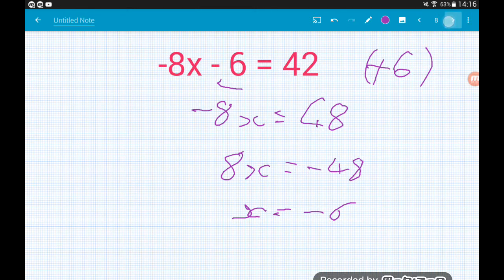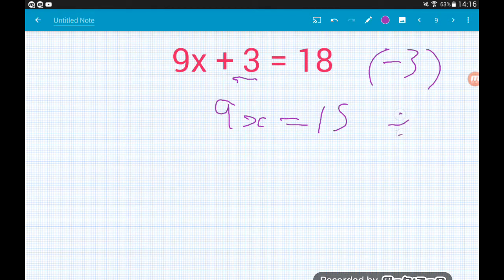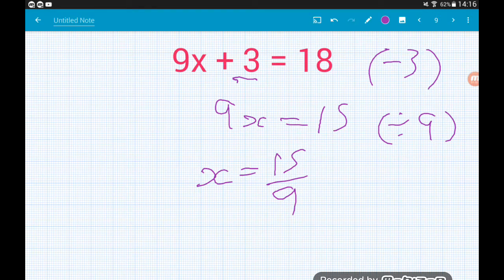The next example: 9x add 3 equals 18. As always, we're going to start by moving that guy. That leaves us with 9x equals 15. Then if we divide by 9, again 9 isn't going to go into 15, but we can happily leave it as a fraction. So we get 15 over 9. But we really should simplify that. We've got a common factor between the top and bottom of 3.